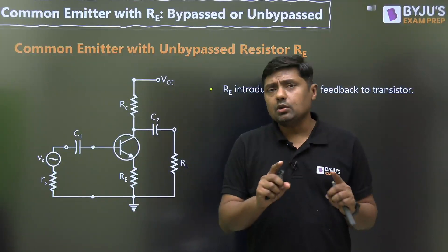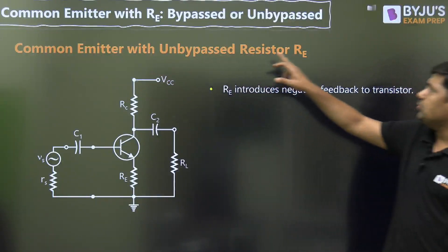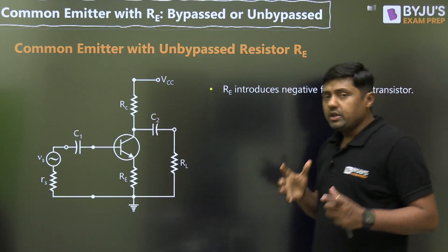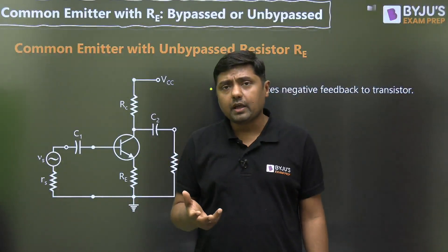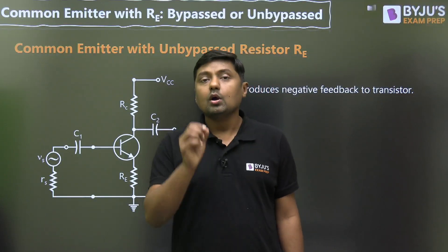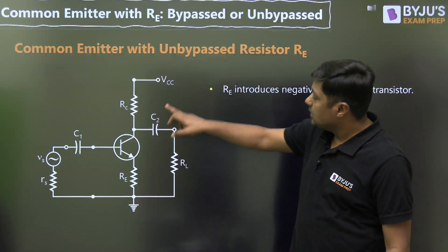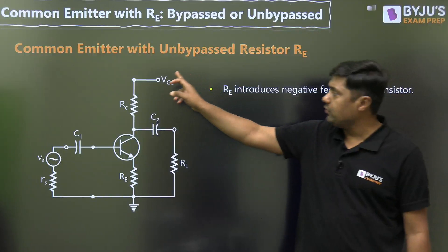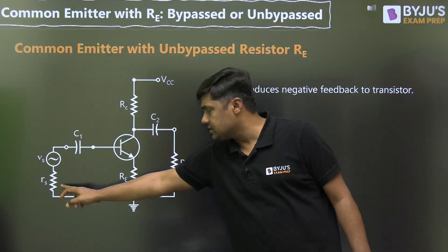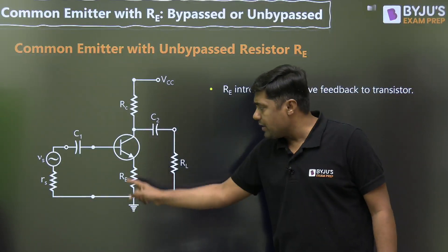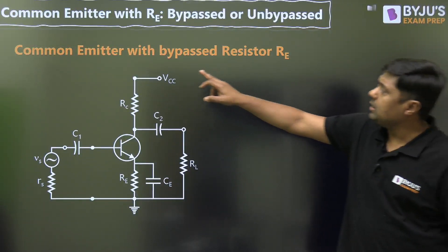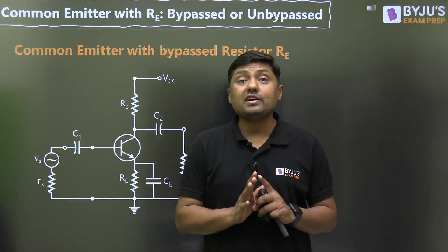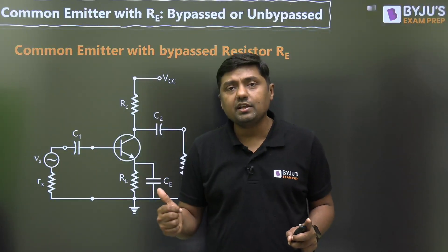What is common emitter with RE? There are two important diagrams. First, common emitter with unbypassed resistor RE. The role of RE here is that it introduces negative feedback to the transistor. When we connect RE, there will be negative feedback, and because of this negative feedback, the gain will be stable. Second, common emitter with bypassed resistor RE — when we connect a capacitor in parallel to RE, it is called bypassed RE. In this case, there is no negative feedback due to RE during AC analysis.